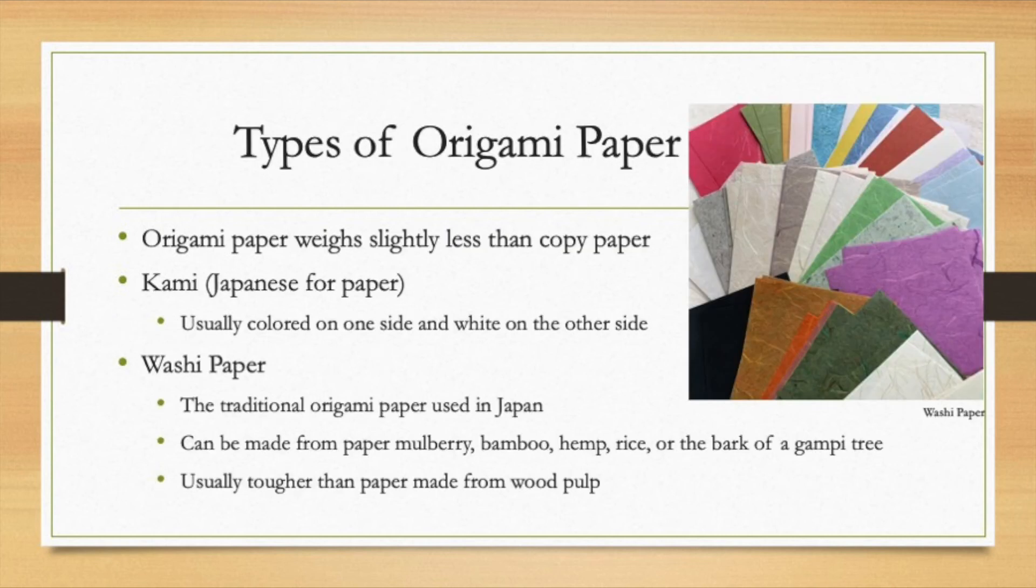Origami paper weighs slightly less than copy paper which makes it easier to fold some of the trickier sculptures. It is often referred to as kami or Japanese for paper and it's usually colored on one side and white on the other side. A lot of origami artists also use washi paper which is generally tougher than ordinary paper. Washi is usually made from the bark of the gampi tree or it can be made from bamboo or hemp or rice or wheat.